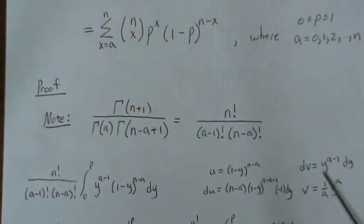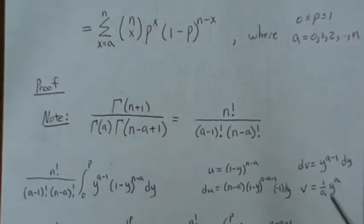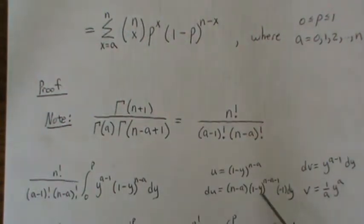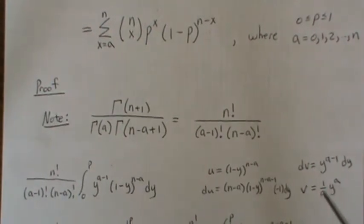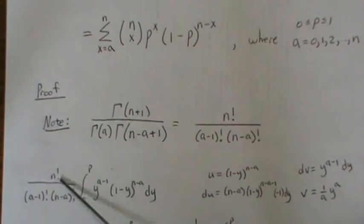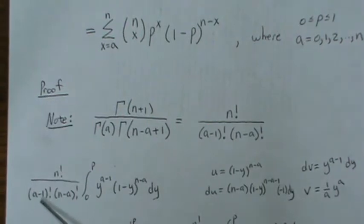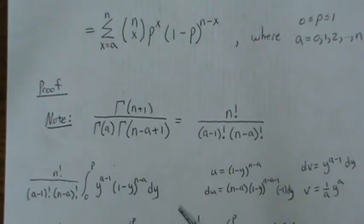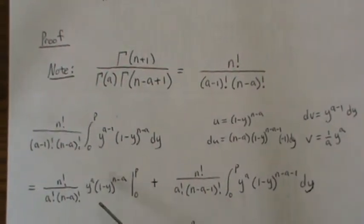So we have U, V, DU, U DV. DU is this and V is this. So the first piece is U times V. Now notice in the UV term, that A right there — U times V — remember we have this constant out front, and that A is going to add to one of these, changing the A minus 1 factorial to A factorial.